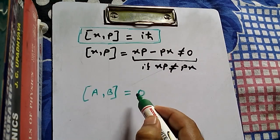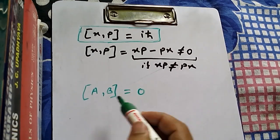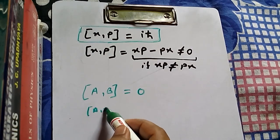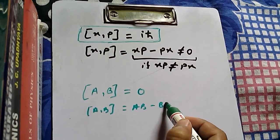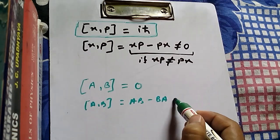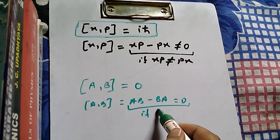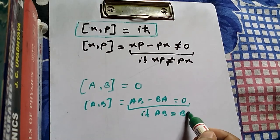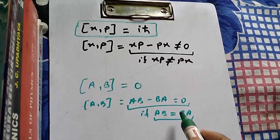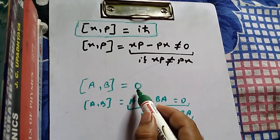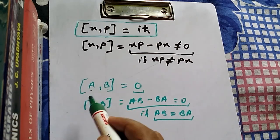We know that for two operators A and B, if their commutation equals zero, then we say A and B commute with each other. In that case, the commutation AB minus BA equals zero, and this is only possible if AB equals BA.